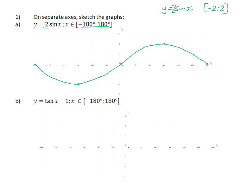And don't forget to give your graph a label. Number B, y is equal to tan of x minus 1, and we are also sketching it for the domain negative 180 to 180. So the parent function is y equals tan x. If we are minusing 1, it means that we are shifting that graph 1 unit down.